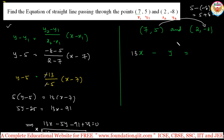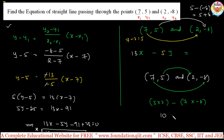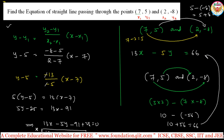Now to find the RHS constant, using the points (7, 5) and (2, -8): take the product of the middle numbers minus the product of the end numbers. Middle numbers: 5 times 2 equals 10. End numbers: 7 times minus 8 equals minus 56. So RHS equals 10 minus (-56) equals 10 plus 56 equals 66. This exactly matches our earlier answer - 13x minus 5y equals 66.